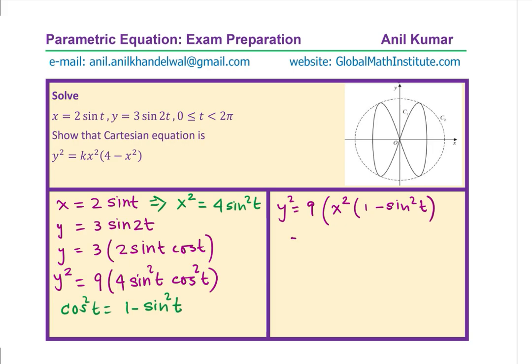We can now write this as 9x²(1 minus sin² t) which will be x² by 4. Taking 4 as the common denominator, we can write this as 9x²(4 minus x²) over 4. Bringing 4 outside, we get 9 over 4 x²(4 minus x²).